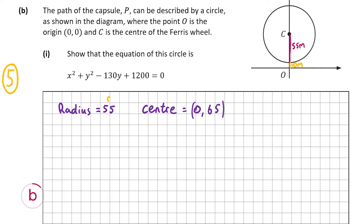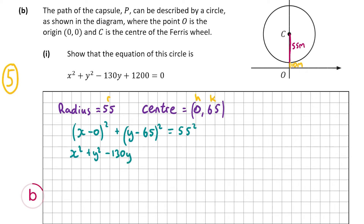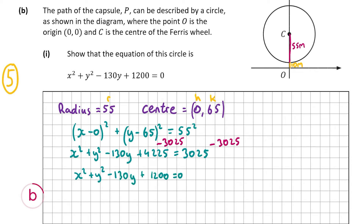With R = 55, h = 0, and k = 65, the circle equation is (x - 0)² + (y - 65)² = 55². Expanding: x² plus y² - 130y + 4225 = 3025. Subtracting 3025 from both sides gives x² + y² - 130y + 1200 = 0, which is exactly what we needed to show. That's our answer for B part 1.